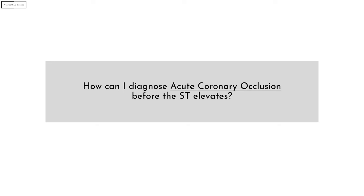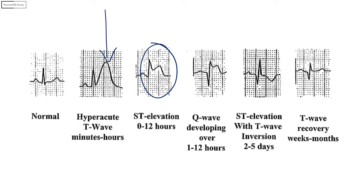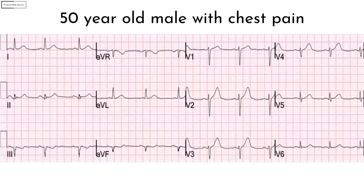How can we diagnose an acute coronary occlusion before the ST elevates? This image shows the evolution of ECG changes in an acute MI: first hyperacute T waves, then ST elevation, pathological Q waves, T wave inversion, and finally an upright T wave. If you want to diagnose an acute coronary occlusion before ST elevation, the obvious answer is to look for hyperacute T waves. The 2022 ACC guidelines formally recognize hyperacute T waves as a STEMI equivalent.